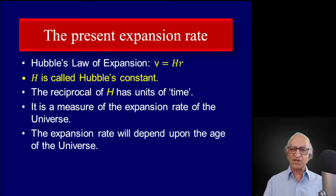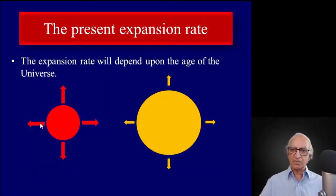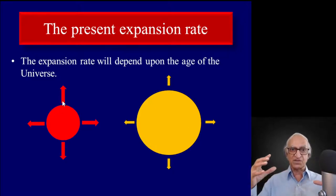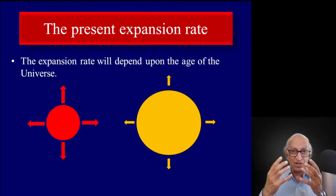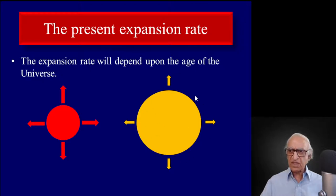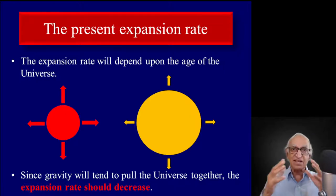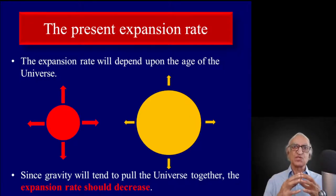The expansion rate will depend on the age of the universe because the Hubble constant is not constant in time. When the universe was small, gravity was stronger; therefore, as the universe tried to expand, the decelerating influence of gravity was stronger and the expansion rate was smaller. Initially after the Big Bang the expansion rate is very large, then gravity pulls it back. Since gravity tends to pull the universe together, the expansion rate should decrease with time — the universe must decelerate as it expands due to self-gravity. This is why the Hubble constant changes with time.